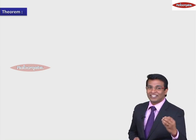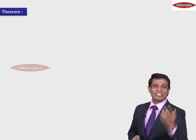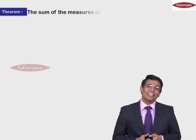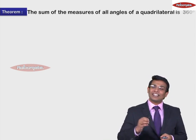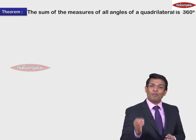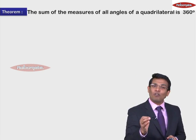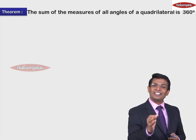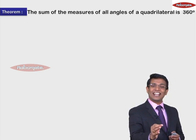Every theorem has a statement. So let's have a statement. The statement goes like this: the sum of the measures of all angles of a quadrilateral is 360 degrees.